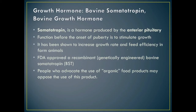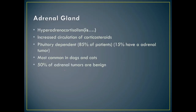Moving on to the adrenal gland: hyperadrenocorticism, which is an increase in stress hormones, is also known as Cushing's disease. It involves increased circulating corticosteroids and can be either pituitary-dependent or adrenal-dependent. About 85% of patients have a brain tumor and 15% have an abdominal tumor. Most common in dogs and cats.